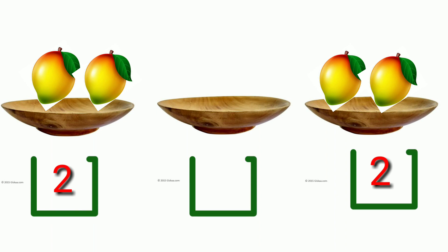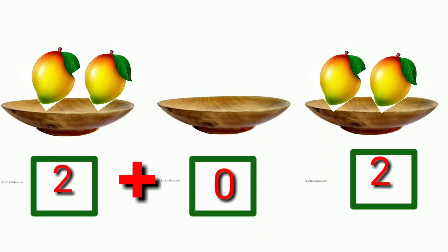Addition of zero. In the first plate we have two mangoes, and in the second plate there is no mango. Now we have only two mangoes. In the last chapter we learned about zero. When we add zero to any number, the answer is equal to the number.